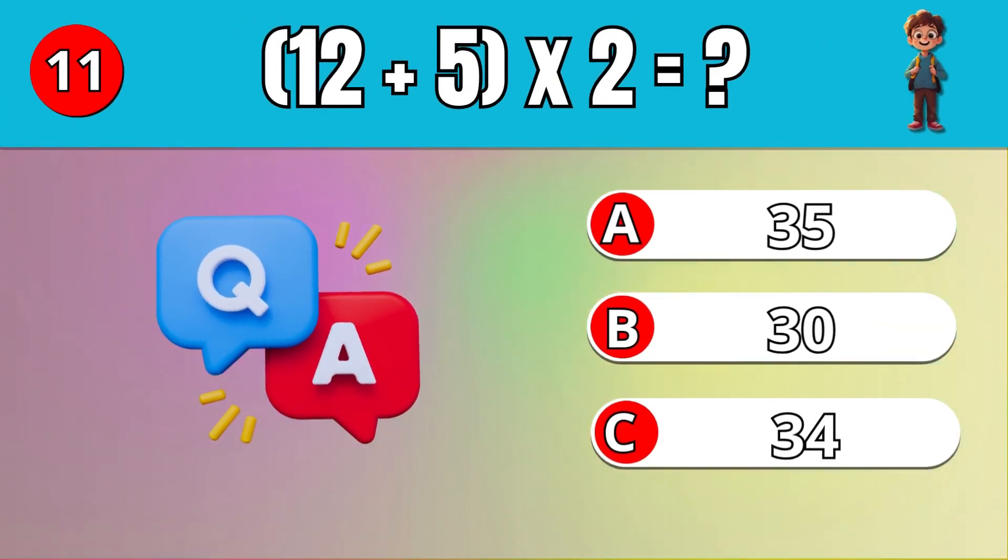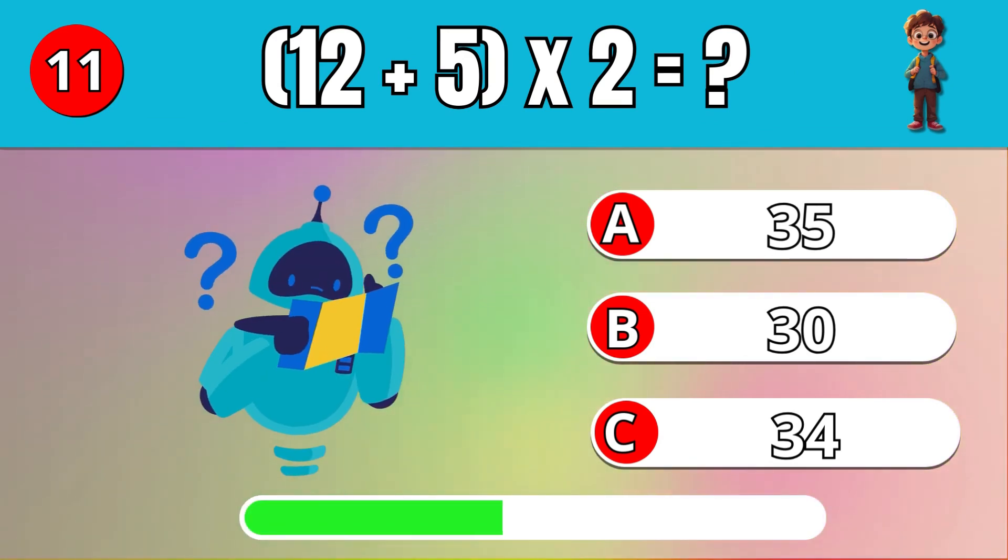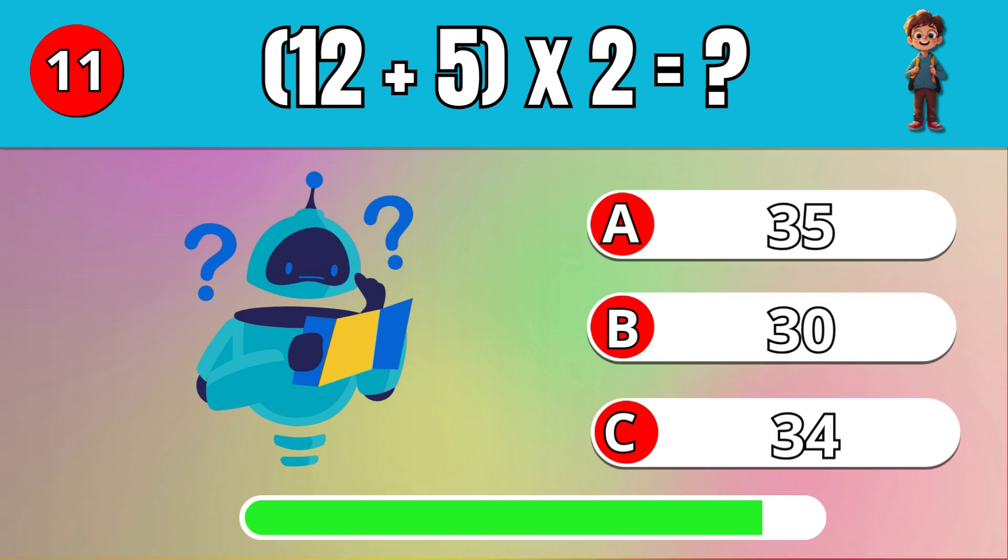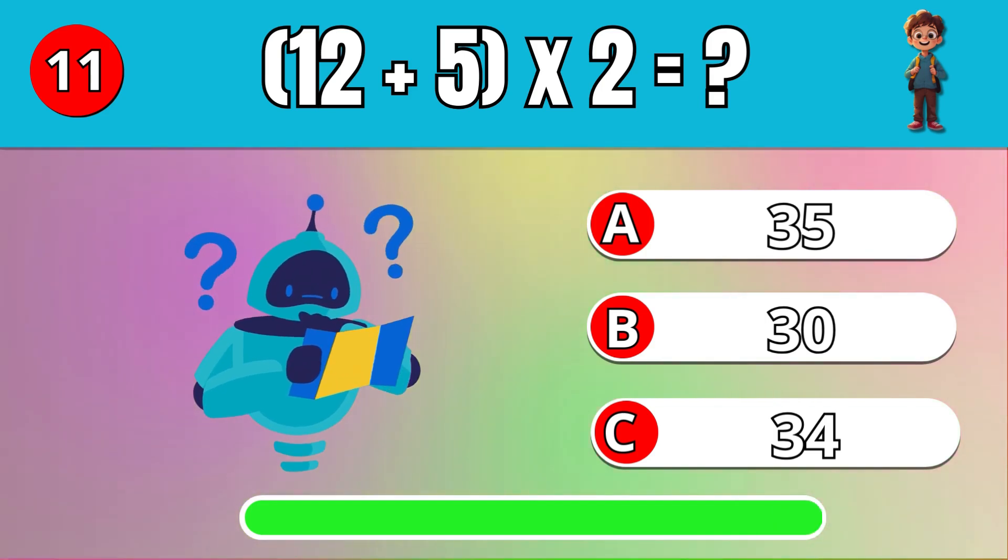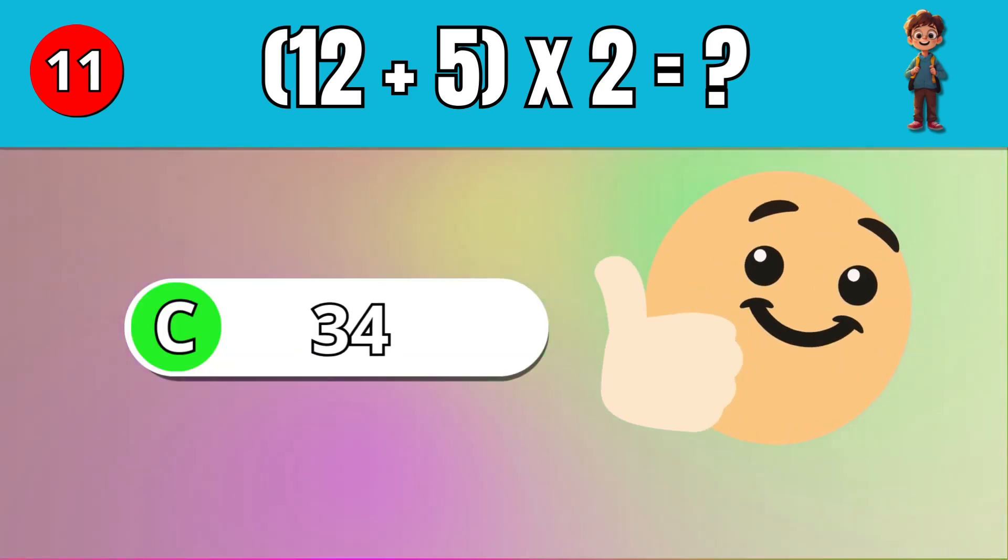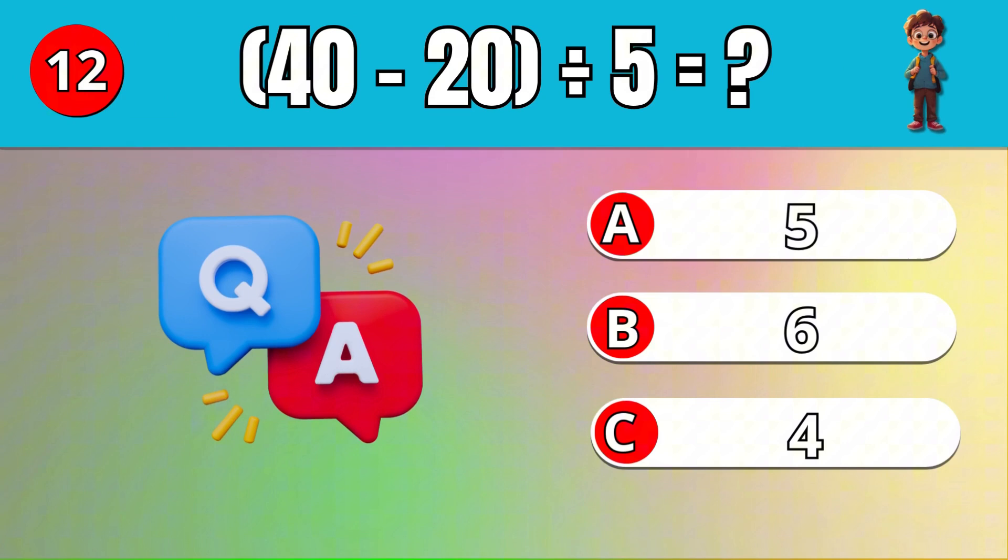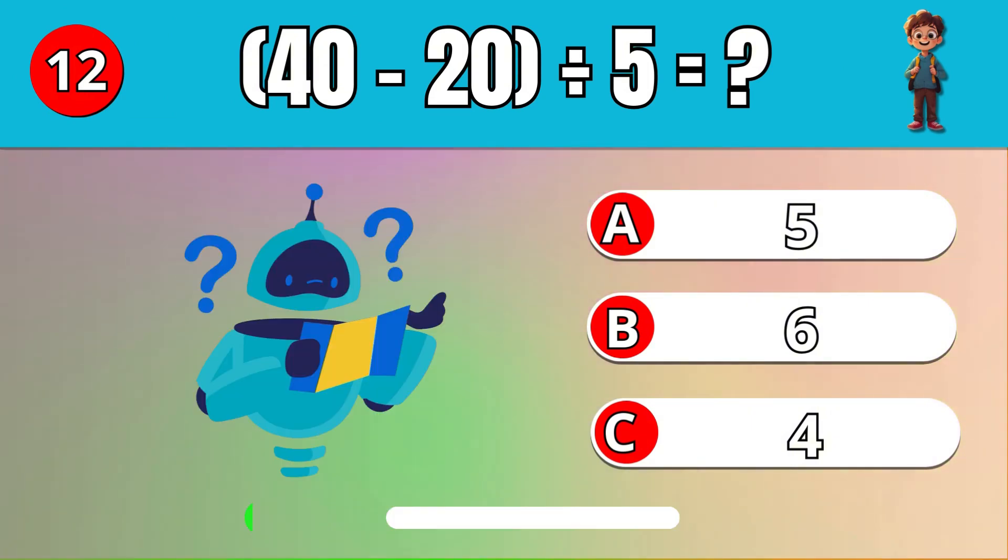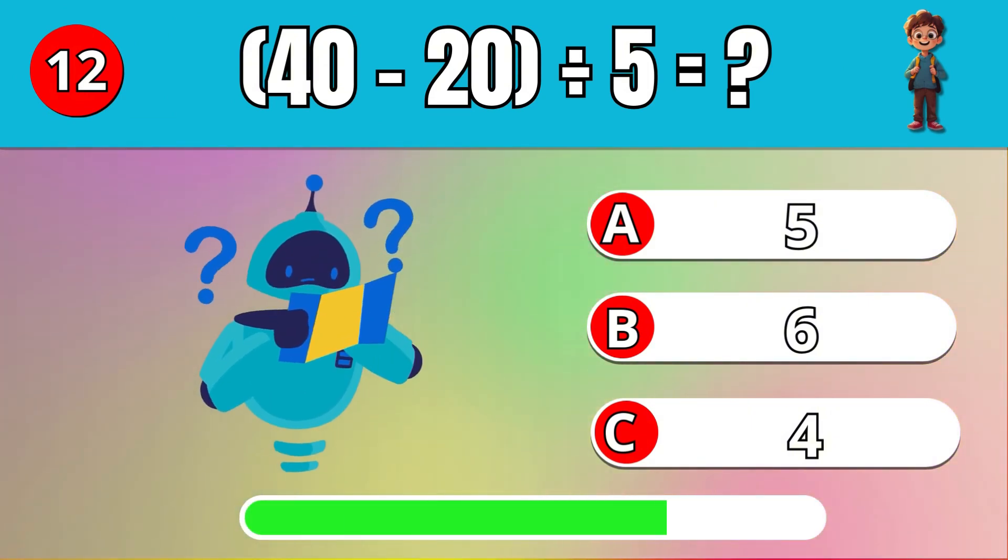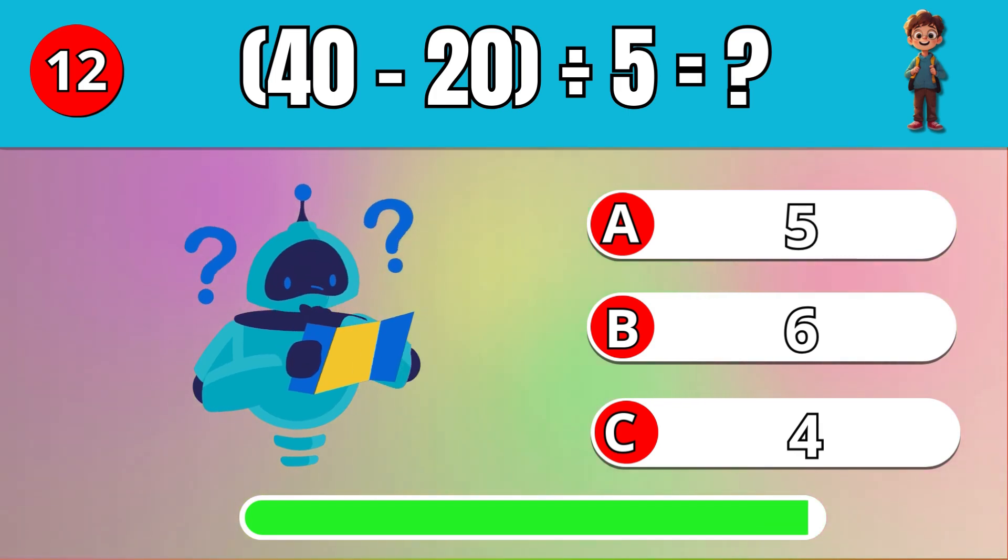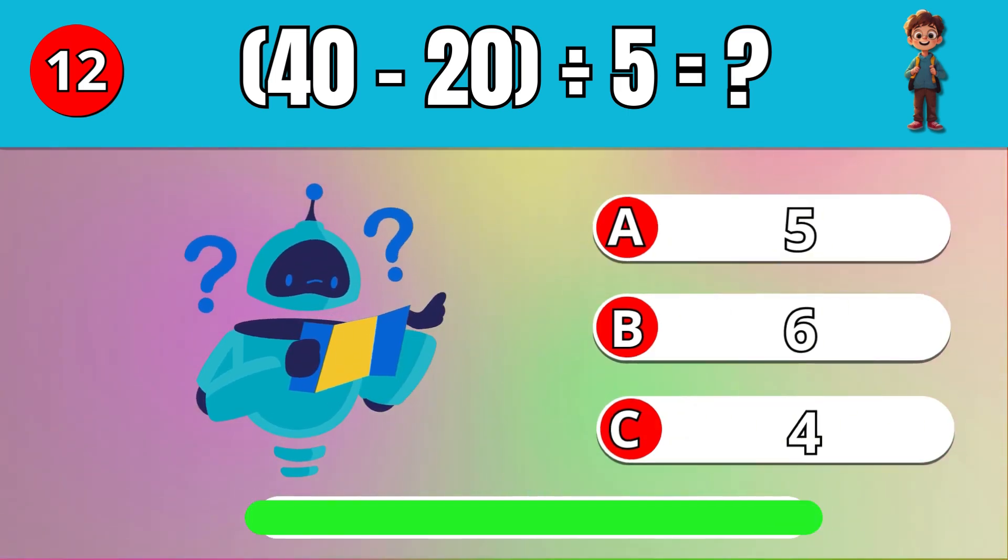What is 12 plus 5 times 2? C, 34. What is 40 minus 20 divided by 5? C, 4.